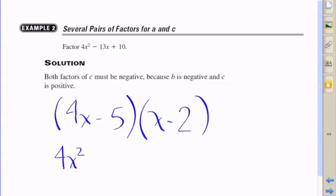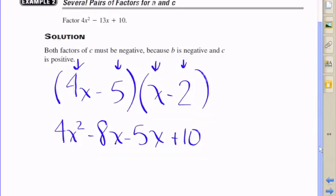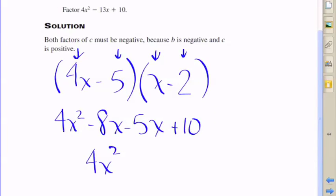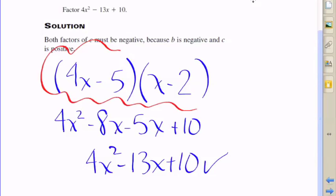4x times negative 2, negative 8. And negative 5 times x, negative 5x. That gives me negative 13x. And negative 5 times negative 2, that is 10. Looks like I've hit one here because negative 8x and negative 5x, their sum is negative 13x, so they check out there. And of course, negative 5 times negative 2 is positive 10. So I factored correctly. The two linear expressions are going to be 4x minus 5 and x minus 2.